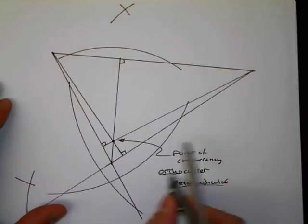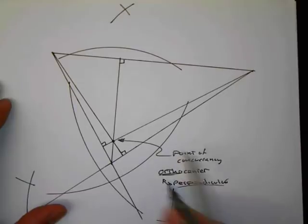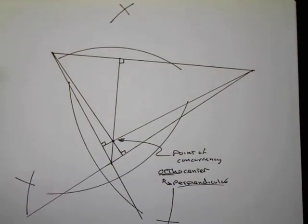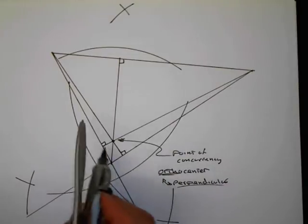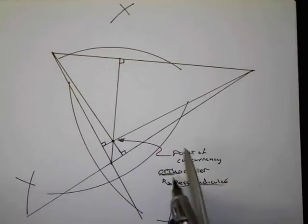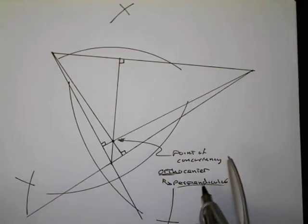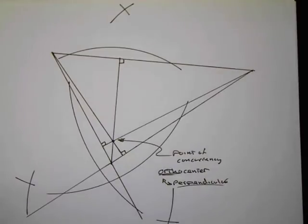So perpendicular and ortho are related terms. Another term you might see in mathematics is orthogonal, which also has a sense of perpendicularity. So these altitudes are perpendicular to the sides, hence the ortho in orthocenter. Again, another type of center for the triangle.